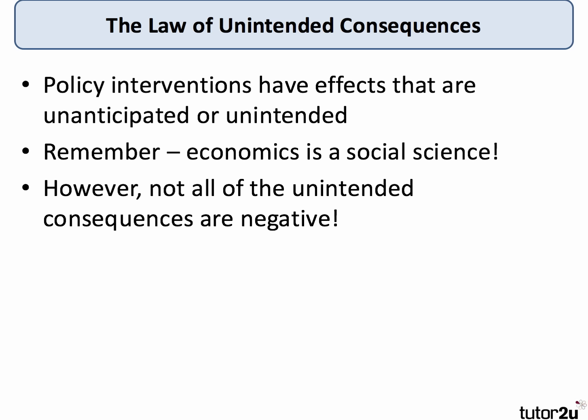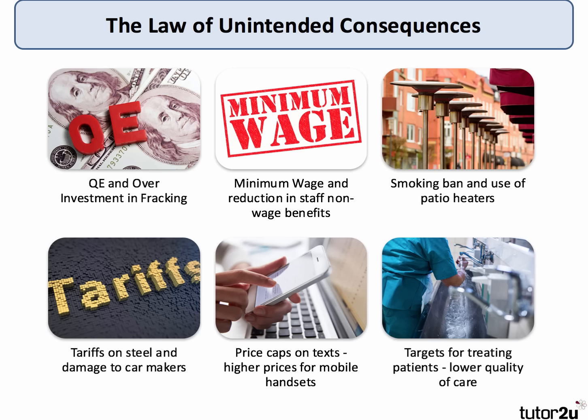Keep in mind that economics is a social science — human behavior is unpredictable and uncertain. The choices we make as individuals and within groups and networks can't always be predicted with accuracy. The rule of thumb is there's at least one unintended consequence of any intervention. It doesn't always have to be a negative unintended consequence; it could be positive. It's worth bearing in mind this law if you're writing about government failure.